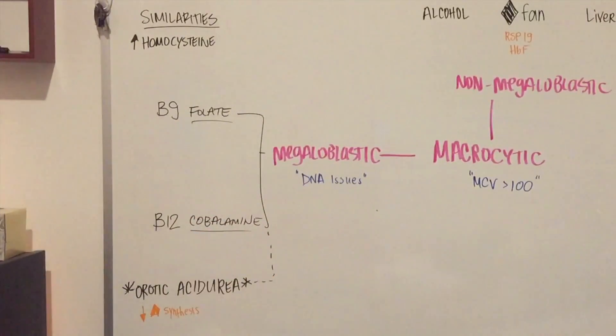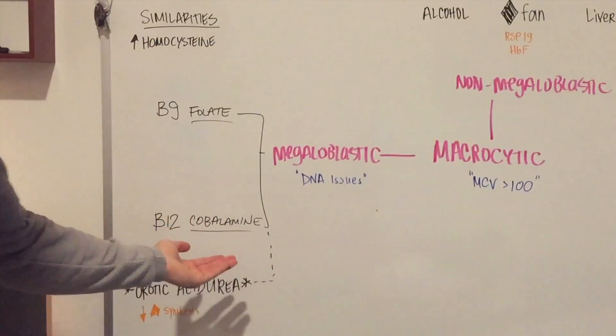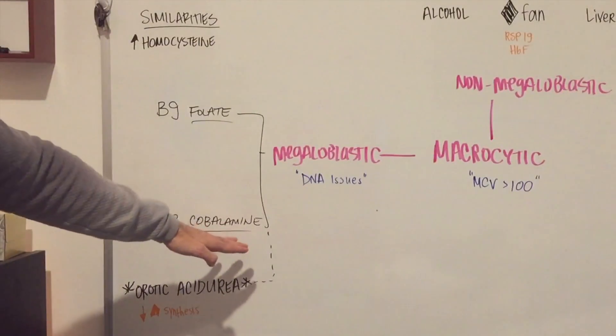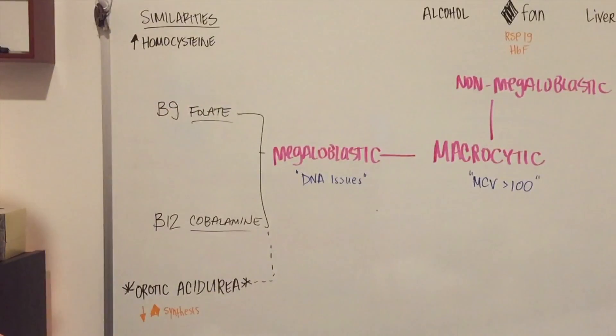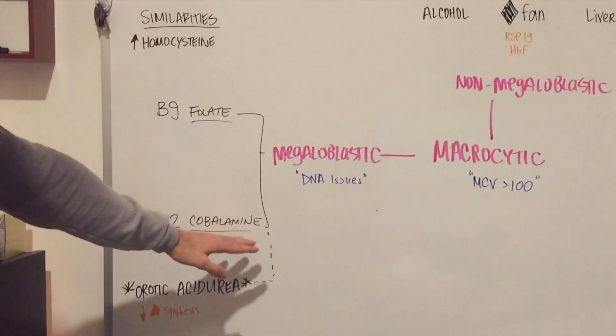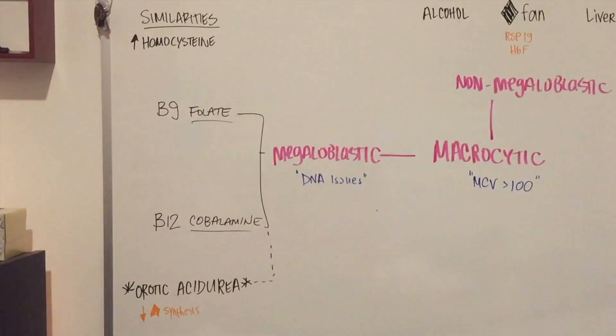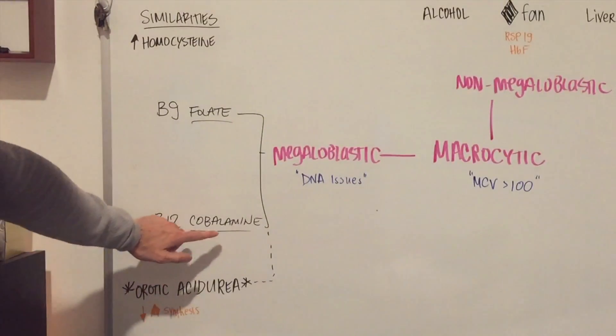Because for B12, you're going to have increased neurological conditions that are unique to B12 deficiencies, but not normally found in B9. Lastly, a differential in addition to neurological deficits, you're also going to see an increase in methylmalonic acid for B12.